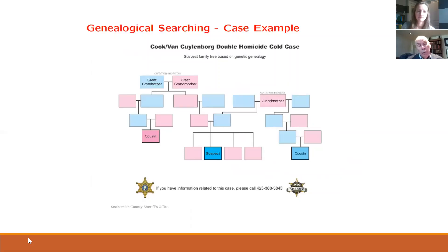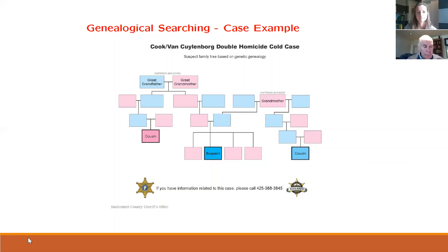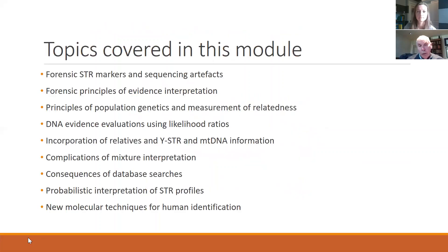Another form of dependence is between individuals, and we've seen a recent interest in genealogical searching. Here's the scenario for a case recently studied and processed in Washington State — a perpetrator was found because his cousins had done 23andMe typing. We'll also talk about lineage markers, Y-STRs and mitochondrial DNA.